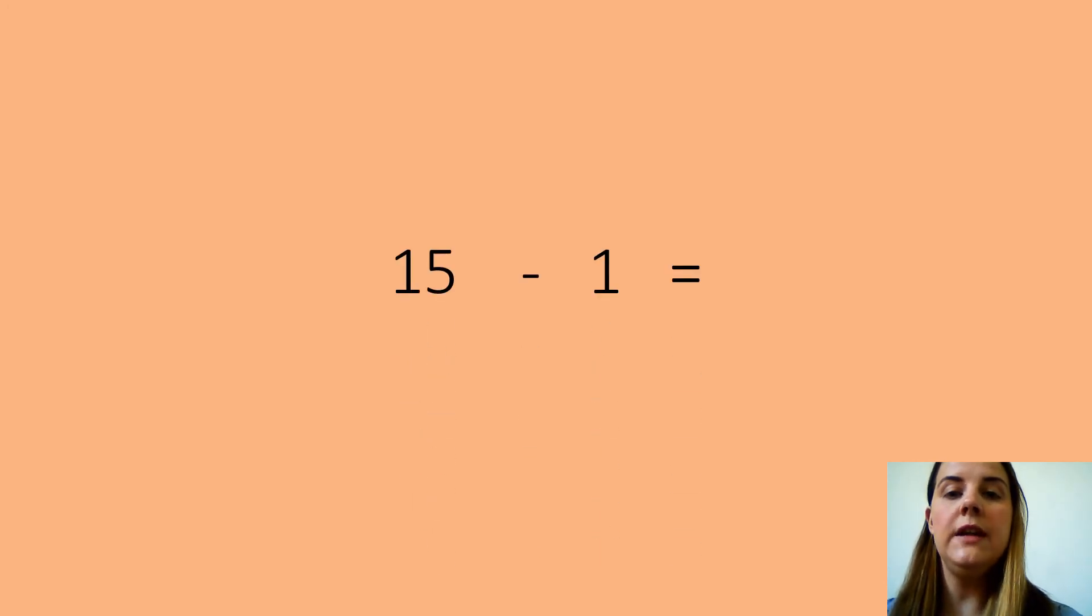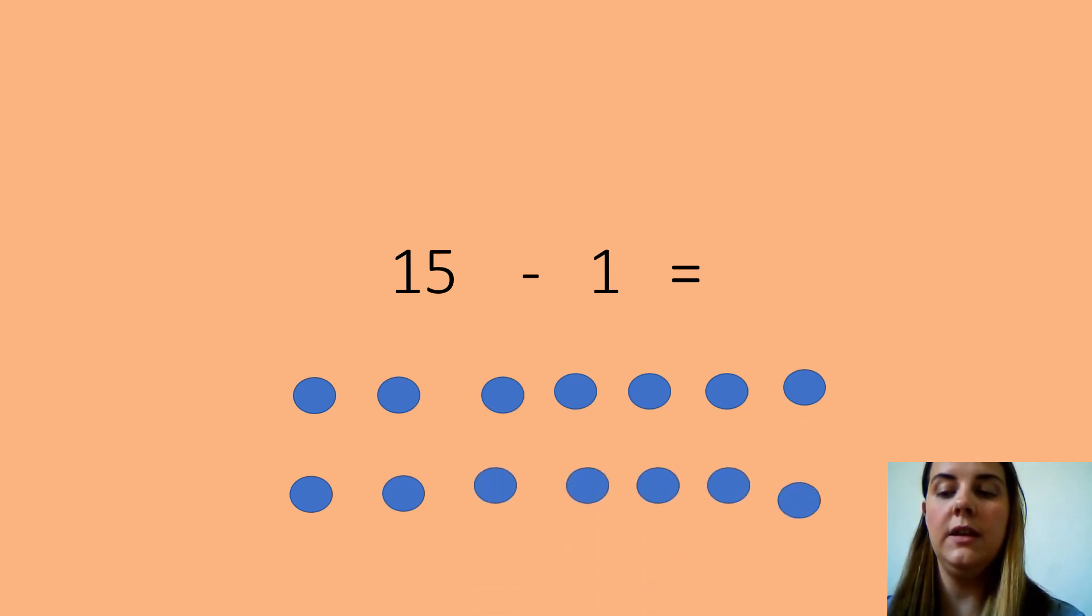And your last one is 15 take away 1 equals. So write the number sentence down. How many circles do I need to do first? Well done, 15. So 1, 2, 3, 4, 5, 6, 7, 8, 9, 10, 11, 12, 13, 14, 15.